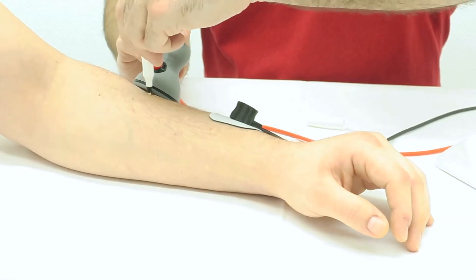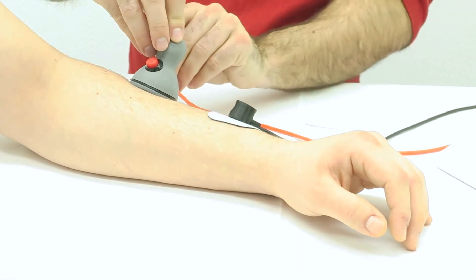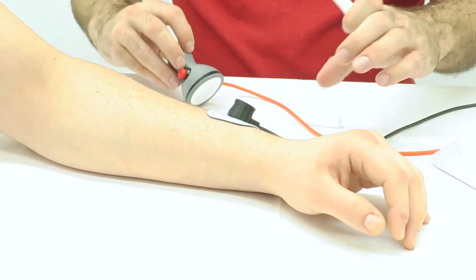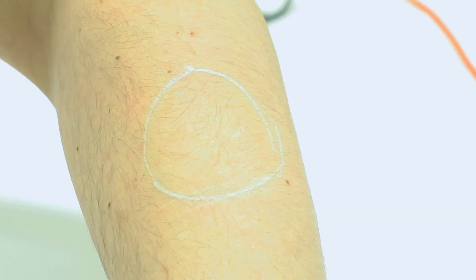Once the optimal motor point is found, draw around the puck onto the user's skin and repeat for hand-open-close functions.